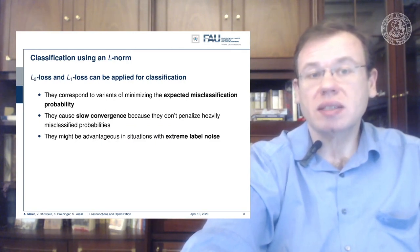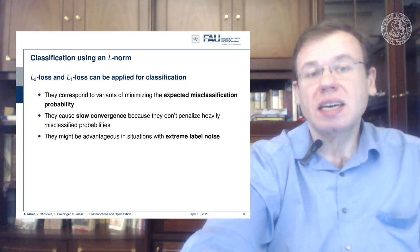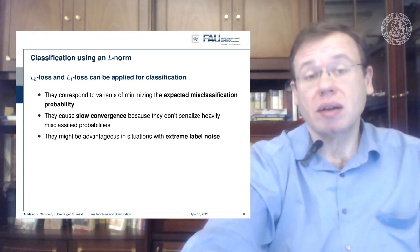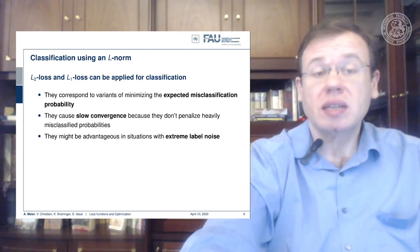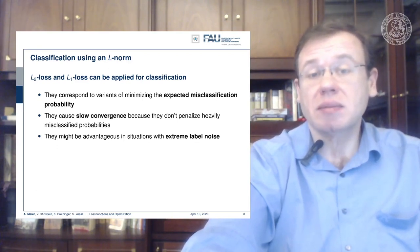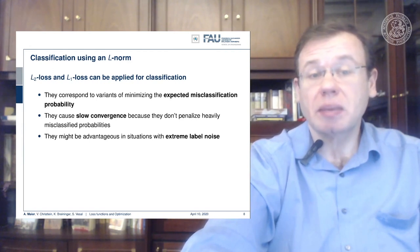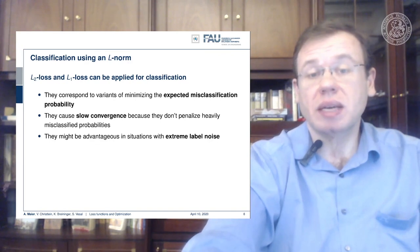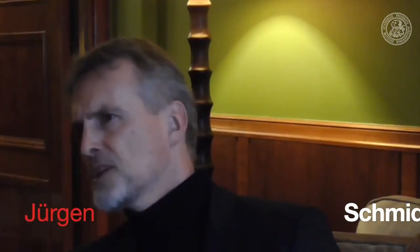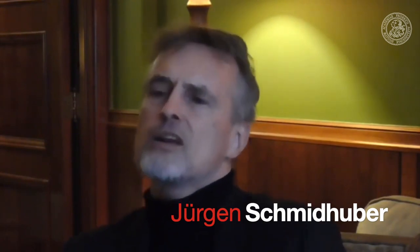There's not just L2 losses, there's also L1 losses. We can also replace those, and we will look at some properties of different L-norms in a couple of videos as well. It's generally a very nice approach and it essentially corresponds to minimizing the expected misclassification probability. It may cause slow convergence because they don't penalize heavily misclassified probabilities, but there may be advantages in extreme label noise. That was my 1987 diploma thesis, which was all about that.